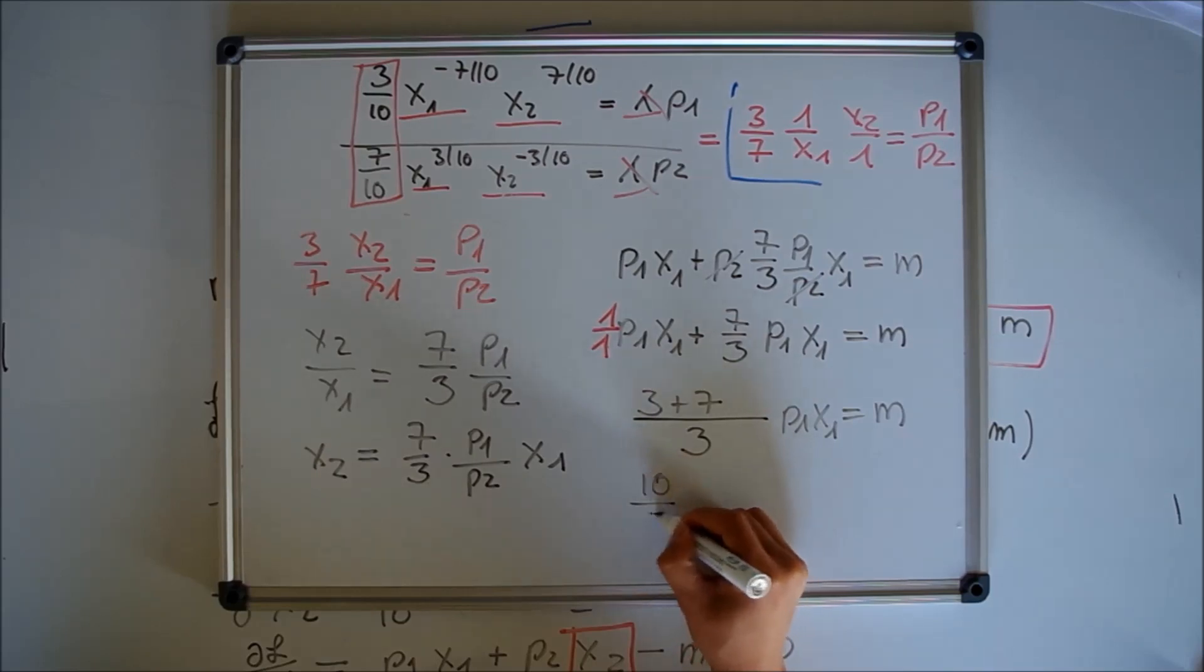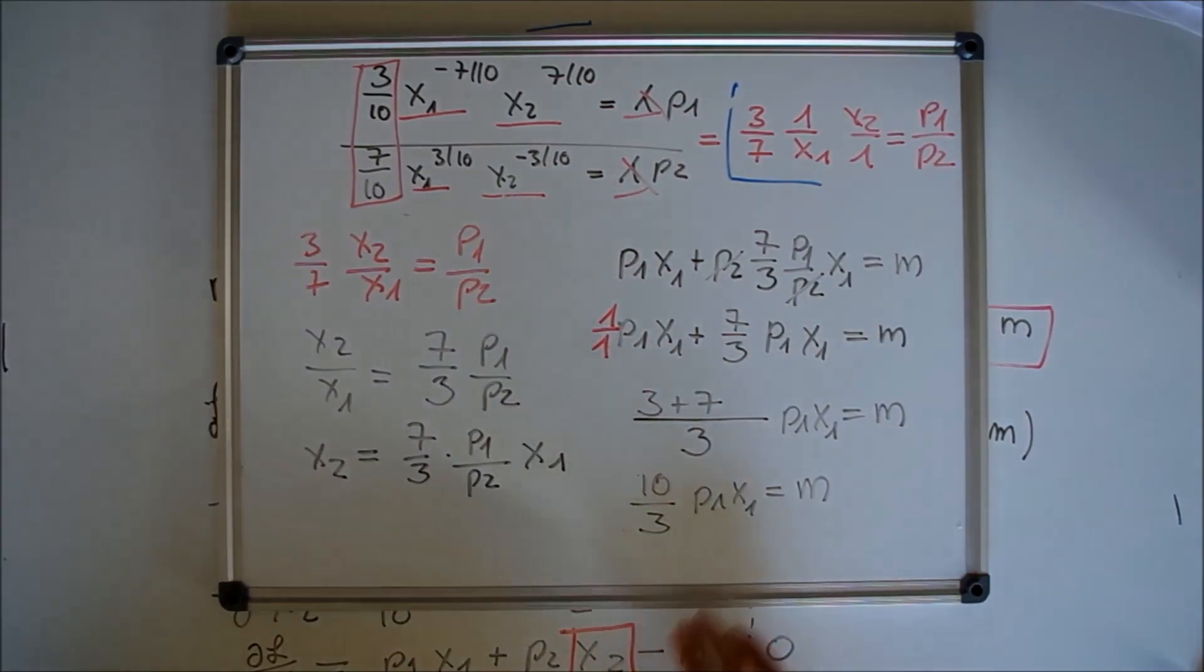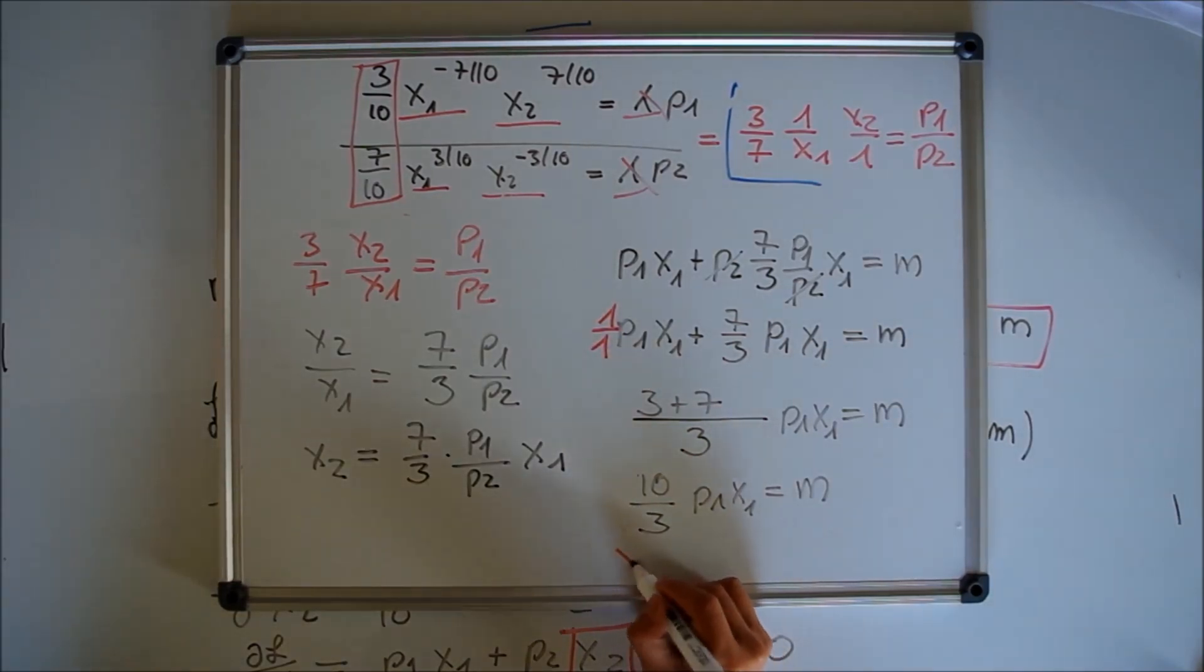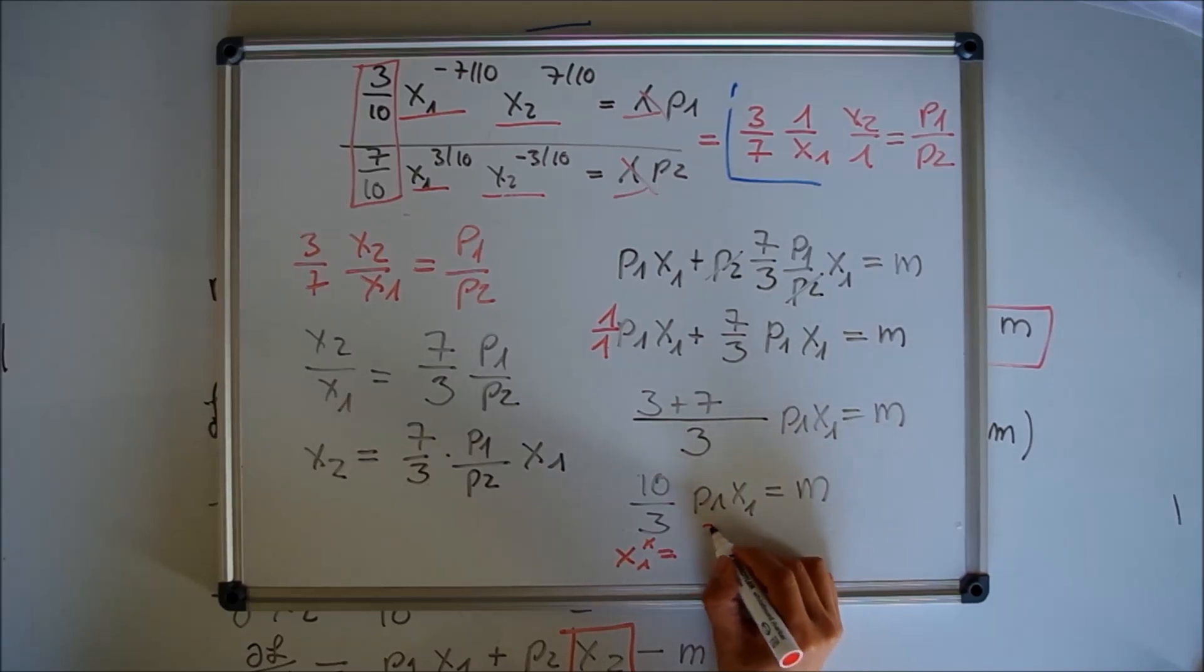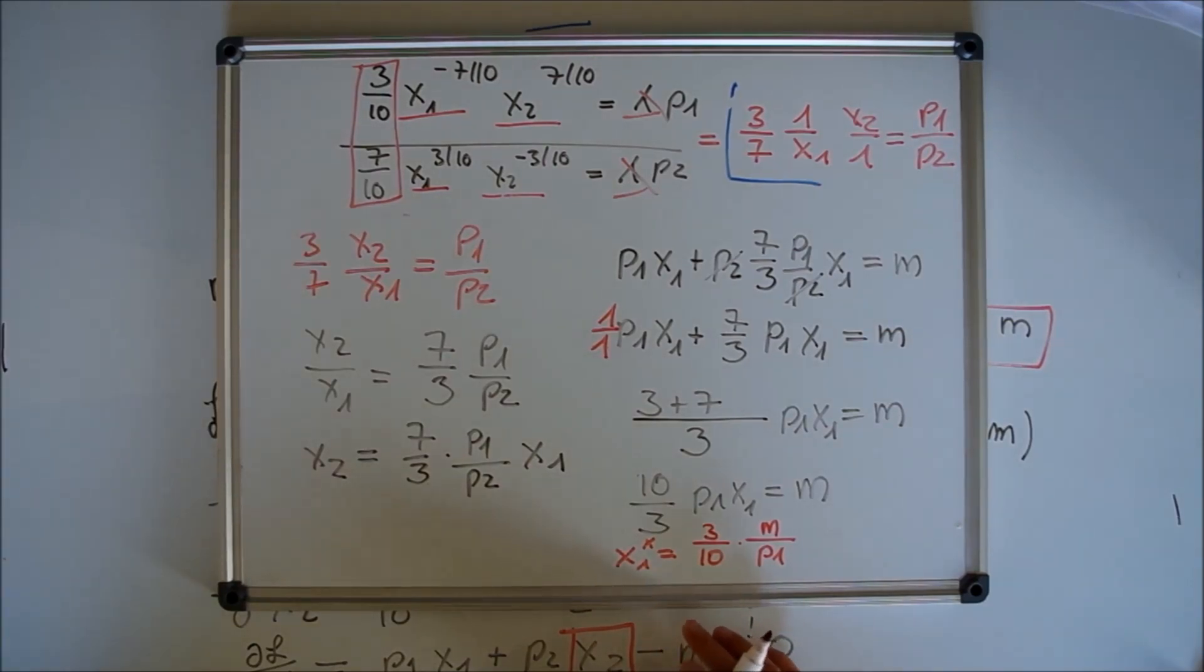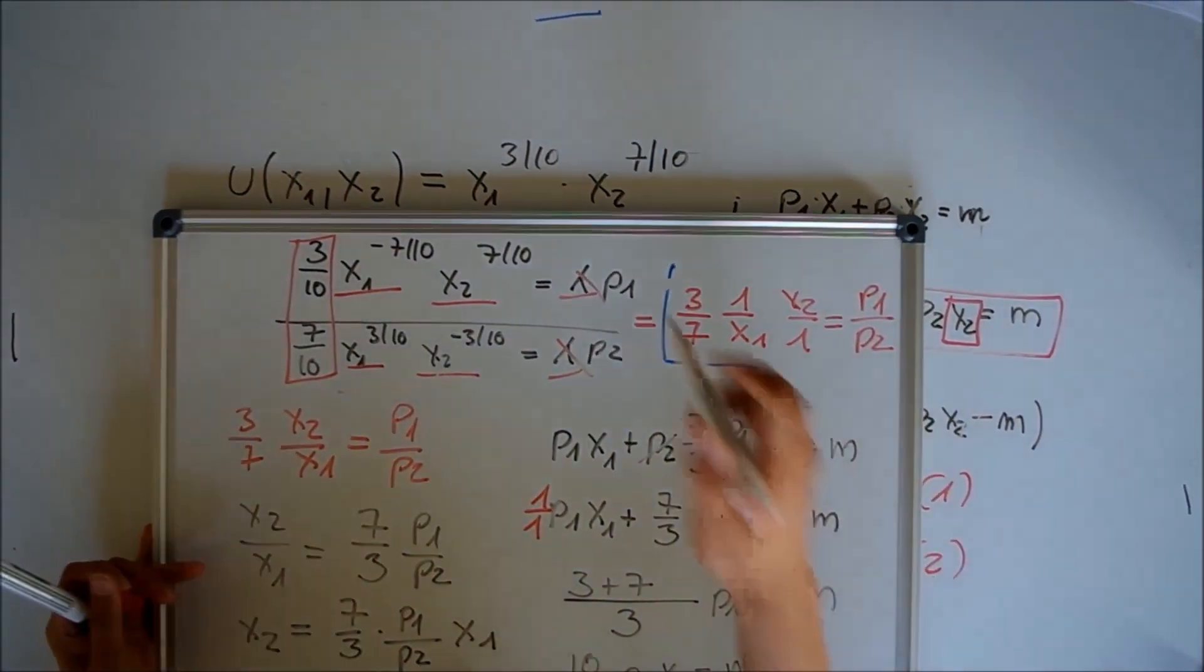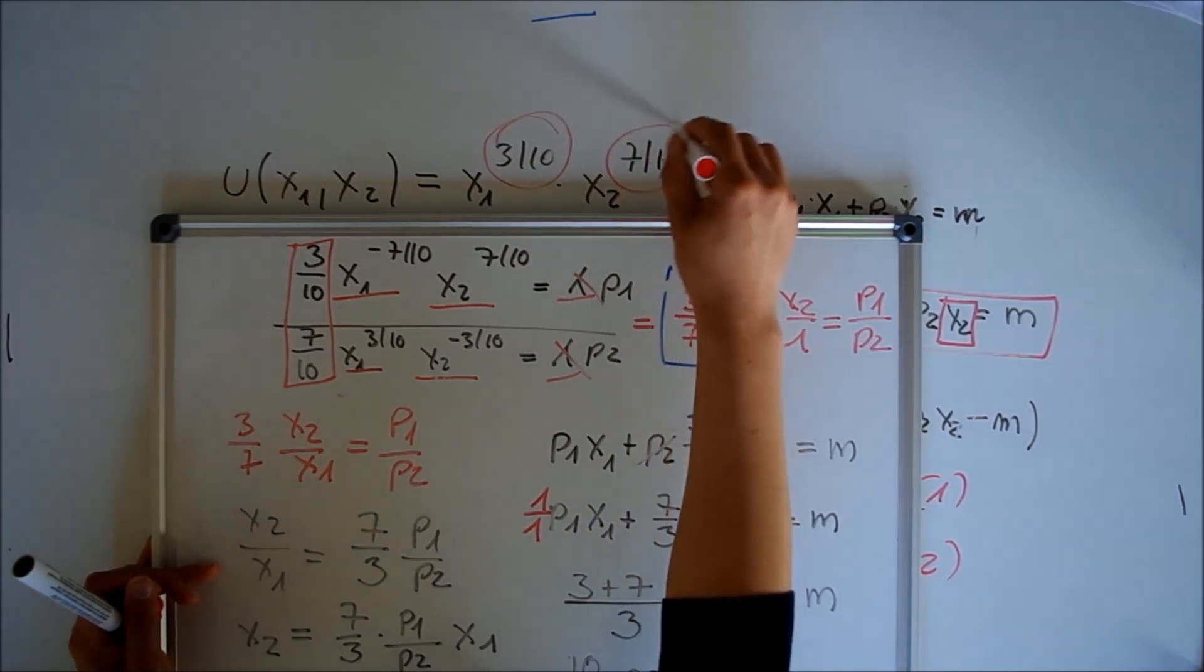Solving for x1, we find our first solution. If we bring the fraction to the other side and divide by p1, we get x1* = (3/10)*(M/p1). A nice trick: if the exponents of the utility function add up to 1, we have constant returns to scale.